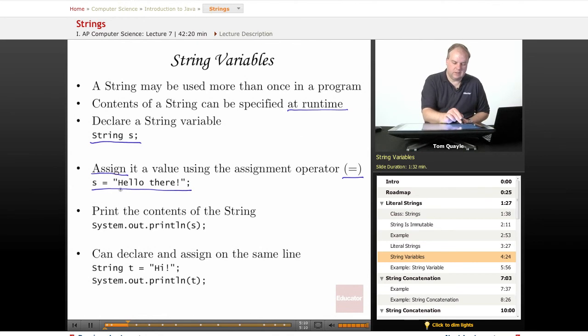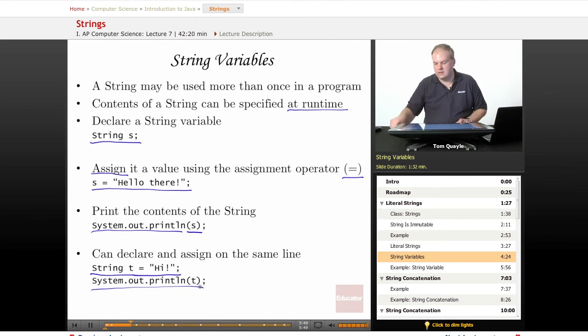And I put the characters that I want to assign into the string between double quote marks. Then I can use that string variable s in my system.out.print line statement, just as though I was using a string literal, but I'm using a string variable instead. Furthermore, I can combine the declaration and the assignment of a string onto a single line. So I can declare string t and then immediately assign it the value high. And then call print line to print that out. So let's take a look at a simple example using string variables.